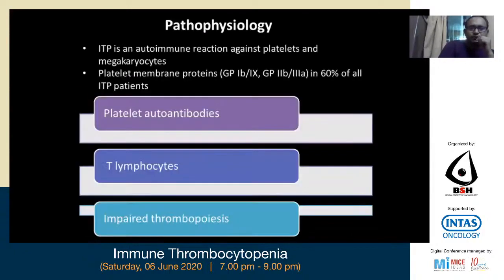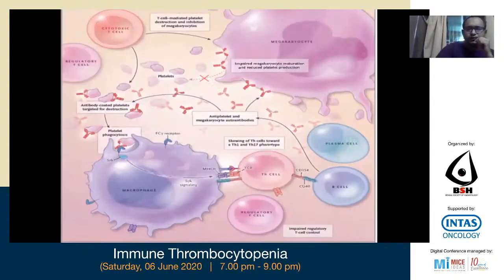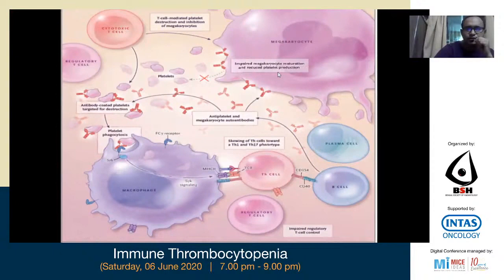ITP is an autoimmune disease against platelets and megakaryocytes — remember, megakaryocytes are also damaged by the autoimmunity. There are platelet autoantibodies, T lymphocyte involvement, and impaired thrombopoiesis. The complex pathophysiology involves deregulation of T-helper cells, with polarity towards TH1 and TH17 and downregulation of T-regulatory cells. There is damage to megakaryocyte function, impaired megakaryocyte maturation, and reduced platelet production. Cytotoxic T cells also play a role, and we know the role of Fc gamma receptors where platelets are destroyed by the autoantibodies produced.